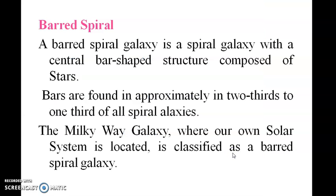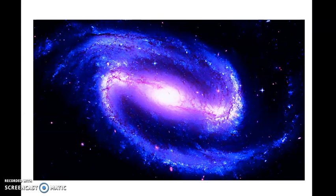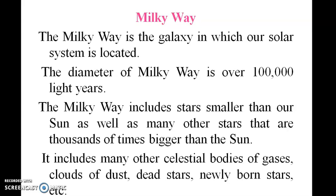A barred spiral galaxy is a spiral galaxy with a central bar-shaped structure composed of stars. Bars are found in approximately two-thirds of all spiral galaxies. The Milky Way galaxy, where our own solar system is located, is classified as a barred spiral galaxy.